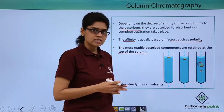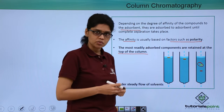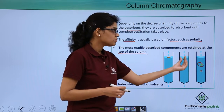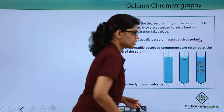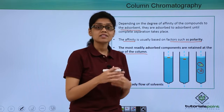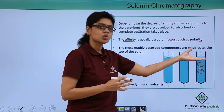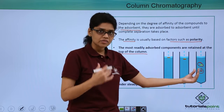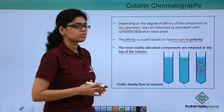Looking at this diagram, we have a mixture of compounds placed at the top of the column. Under a steady flow of solvents, the mixture gets separated into two different compounds shown as two different spots. The spot shown in yellow has higher affinity towards the adsorbent and is retained at the top part of the column, while the one with lower affinity is retained at the lower part of the column. This is essentially what happens in column chromatography.